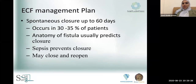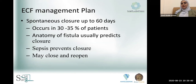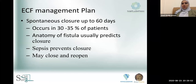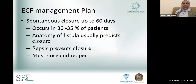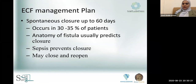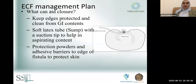By this time, we need to have a plan. If the fistula did not close within 60 days, it means it will likely never close spontaneously. Spontaneous closure only happens in about 30–35% of patients. The anatomy of the fistula predicts closure: a low fistula or colonic fistula is easier to heal, while high-output fistulas in the jejunum, ileum, or stomach are more difficult. Sepsis prevents closure, and be aware that the fistula may close and re-open, requiring the management cycle to restart.